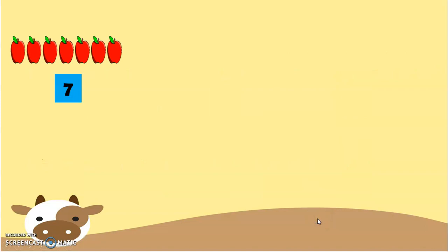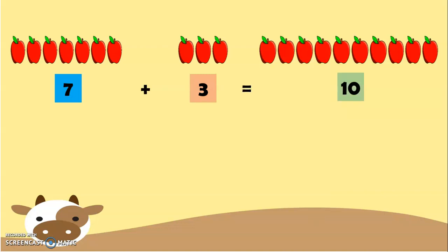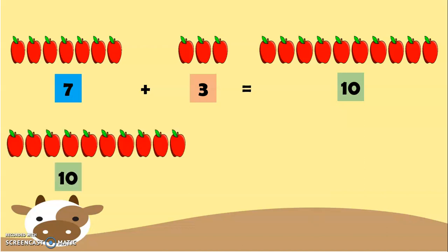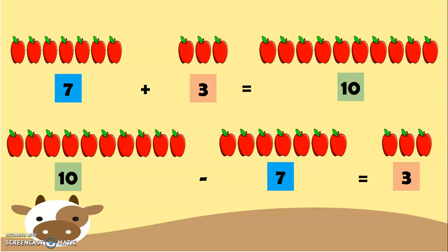We have 7 apples plus 3 more apples equals 10 apples. But, now that we have 10 apples, we're going to subtract 7 or we're going to remove 7 apples. Now, we will just have 3 apples there.